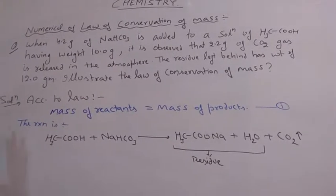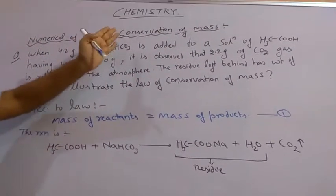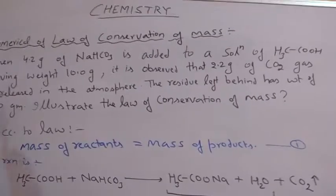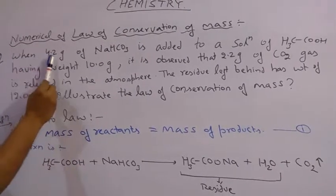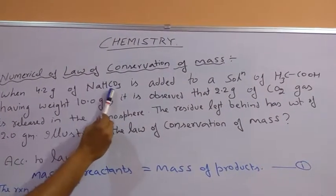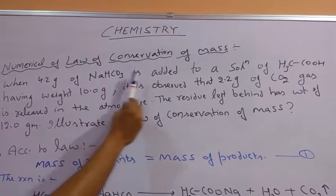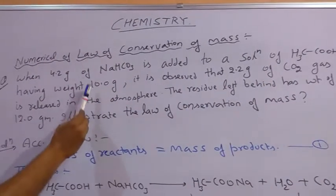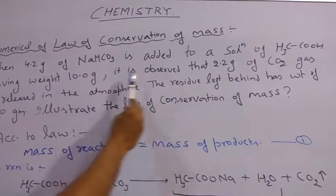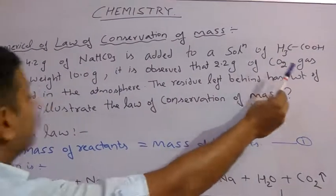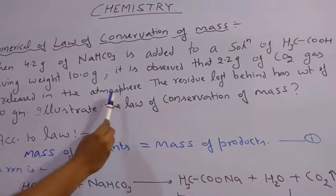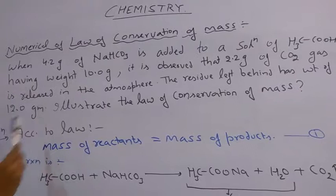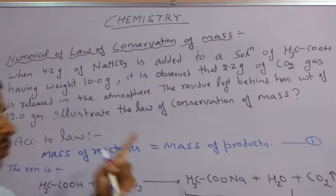There is a very simple numerical related to law of conservation of mass as written on the blackboard. You first understand the statement of the numerical. The numerical is saying when 4.2 gram of baking soda having formula NaHCO3 has been added to a solution of acetic acid having formula CH3COOH whose weight was 10 gram, it was observed that 2.2 gram of CO2 gas is released in the atmosphere and the residue which has left behind shows the weight of 12 gram. You have to simply illustrate the law of conservation of mass.